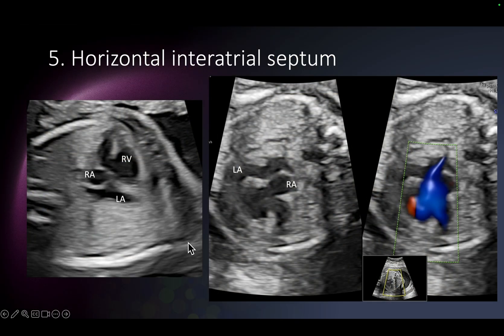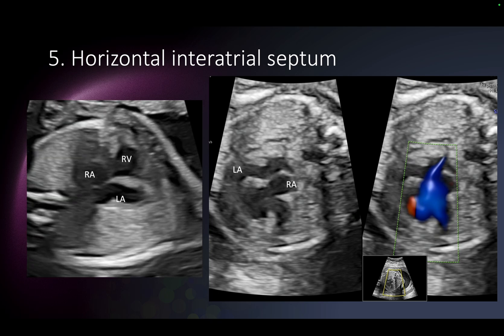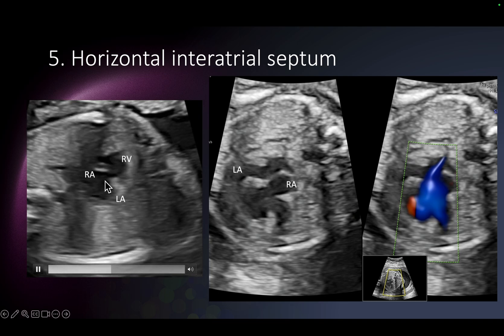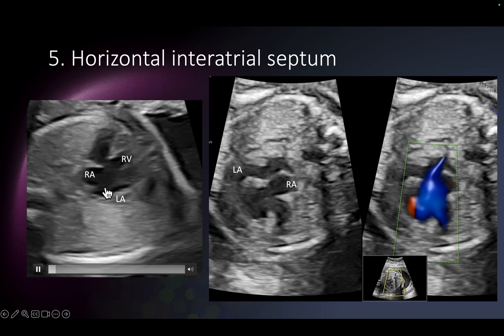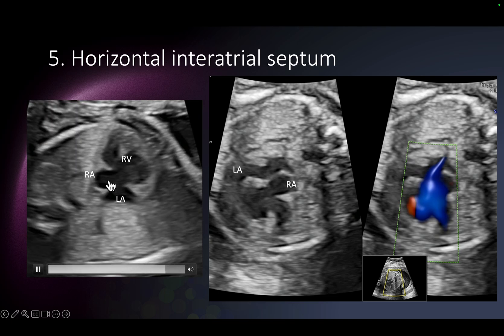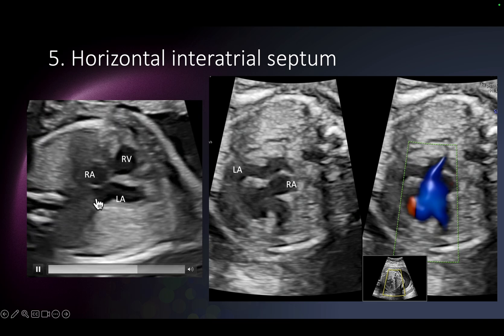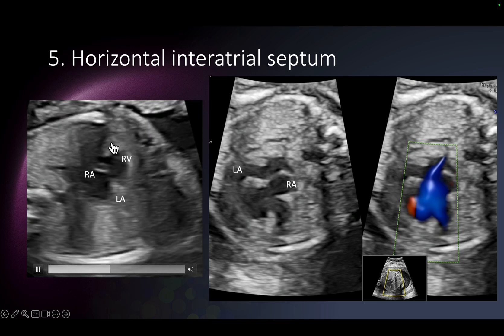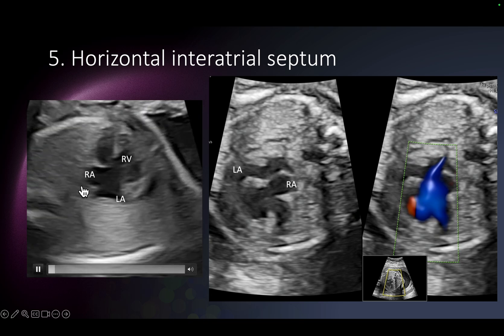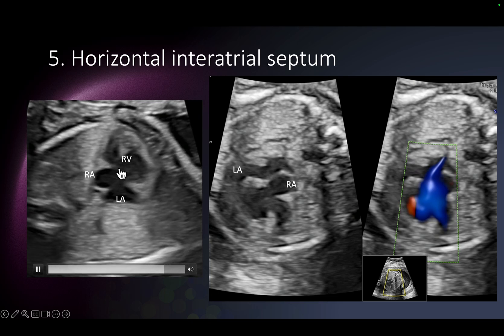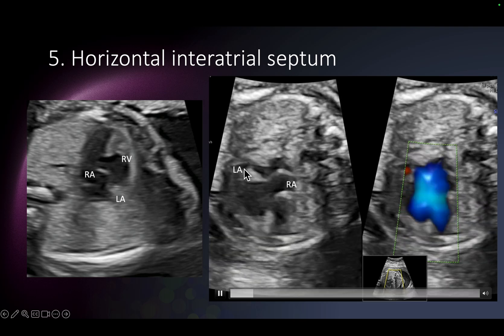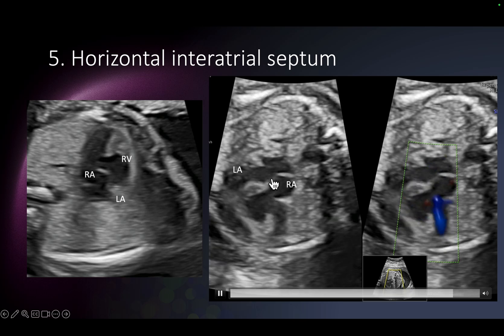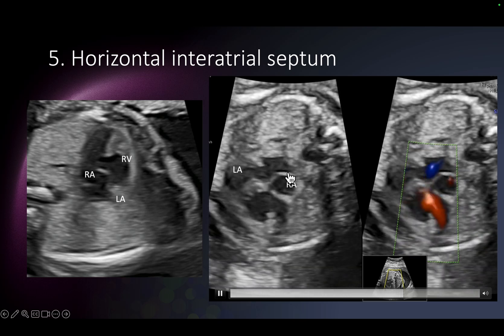Now let's look at another slide. You notice the septum is horizontal. What do I mean by horizontal septum? Look at this inter-atrial septum — the direction of the inter-atrial septum is on this side, while the inter-ventricular septum is almost at 90 degrees to the inter-atrial septum. In a normal fetus or normal child, you would see the inter-atrial septum almost aligned with the inter-ventricular septum. Here they are at right angles to each other.